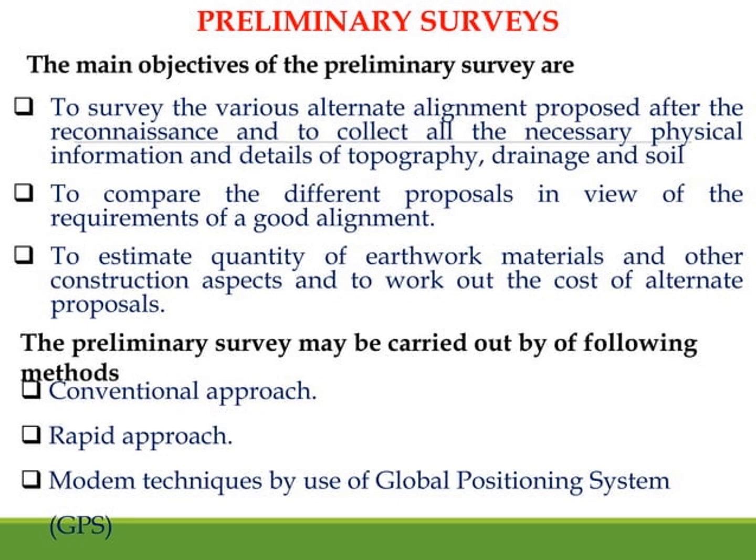We estimate the total quantity of earthwork and other construction aspects to work out the alternative proposals. We assess the cost of the earthwork for each alignment — sometimes it will take a higher cost for certain alignments — so we can avoid those. The preliminary survey is carried out using conventional approach, rapid approach, and modern techniques.